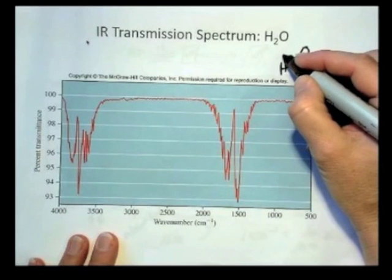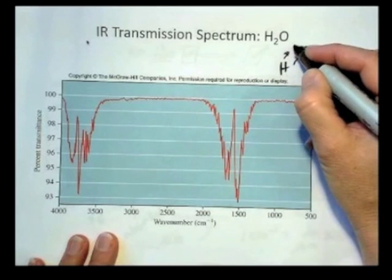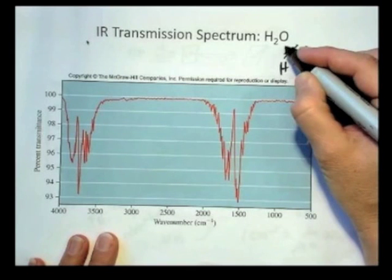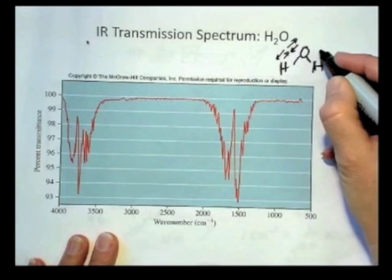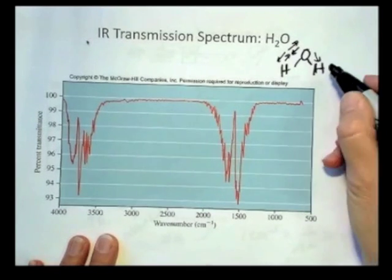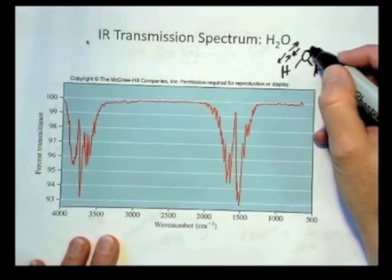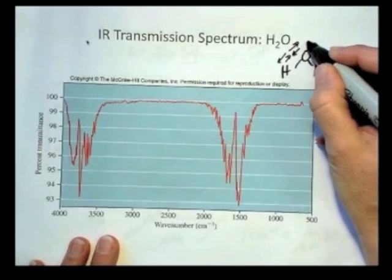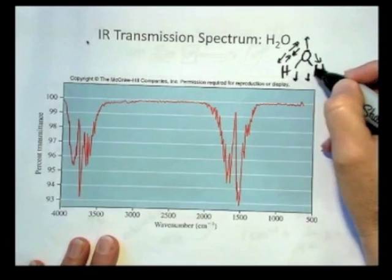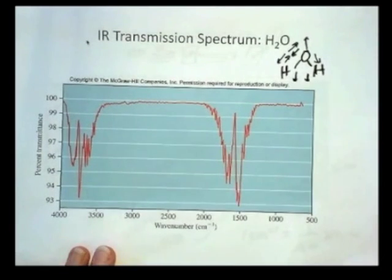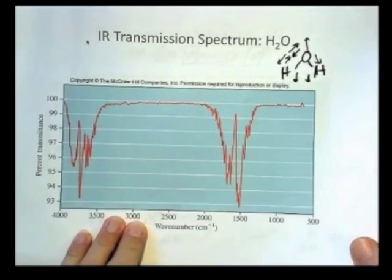stretching is going to be some kind of a stretch, maybe this way and that way, and maybe this one's going in one direction. That would be an asymmetric type stretch bending. The whole molecule could be bending up and down and up and down, back and forth. So which one do you think would be due to the stretching?